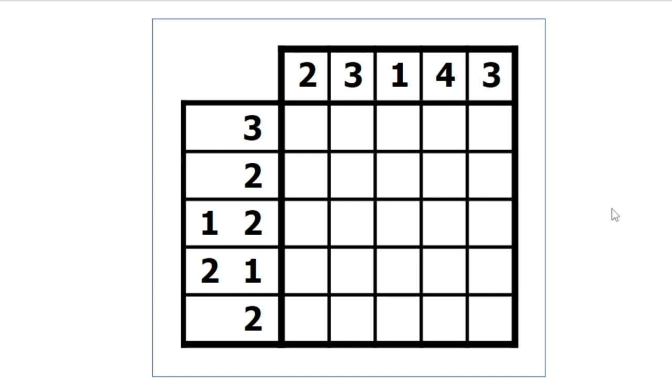So the rules of a nonogram are actually pretty simple, but it still ends up being a very good logic puzzle. This is a five-by-five grid. They can be much bigger. In our book, you'll notice there are ones that are much bigger because they actually end up creating a picture. The rules are very simple.